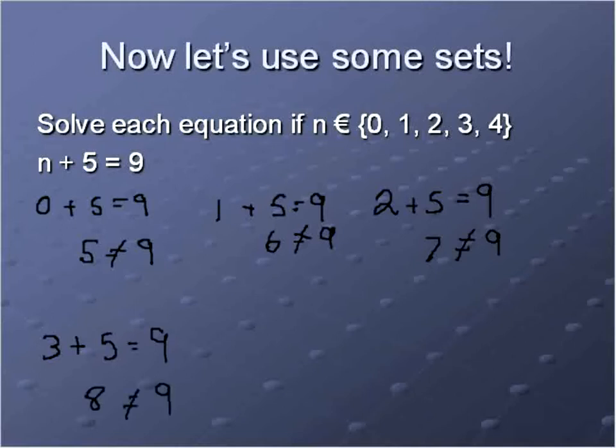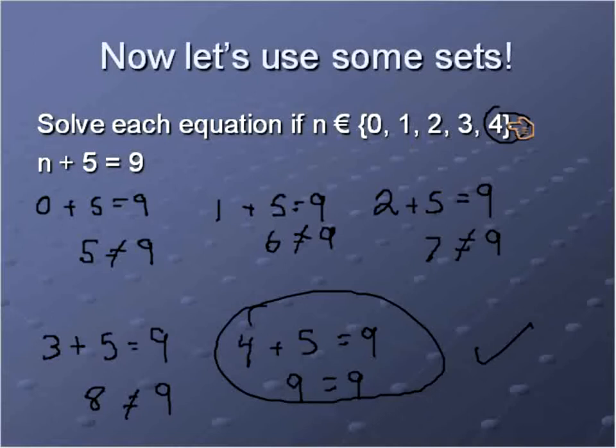And in this case, we get to our final number, 4. We substitute in that value from the set and 9 is actually equal to 9 at that point. So that would be our correct response. In this case, we would have the value of 4 as the solution. But you notice that we replaced every single number from the set or we substituted each number from the set into this equation.